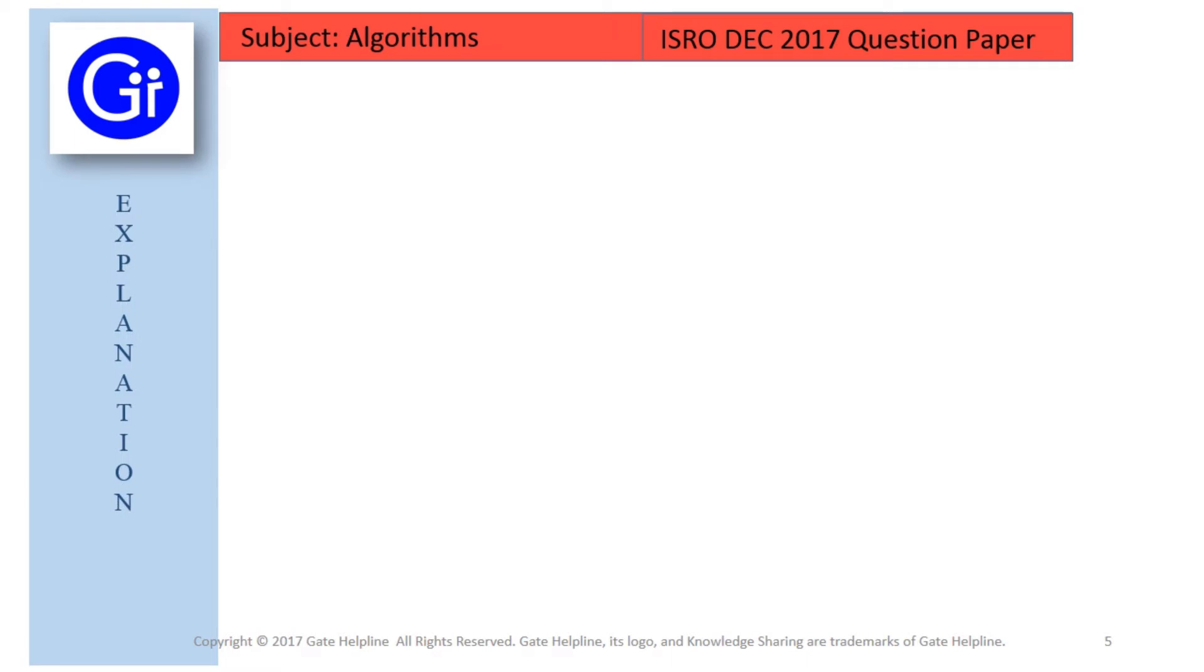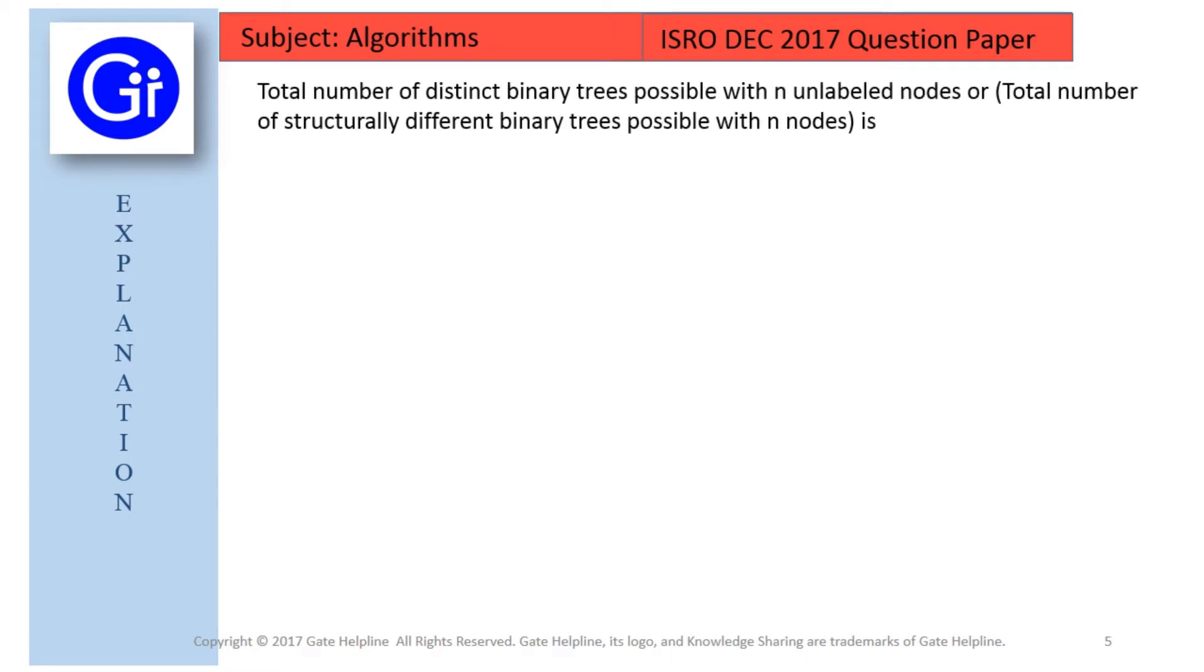So friends, now we will see explanation to this question. So first of all, we start with the total number of distinct binary trees possible with n unlabeled nodes or total number of structurally different possible binary trees possible with n nodes.